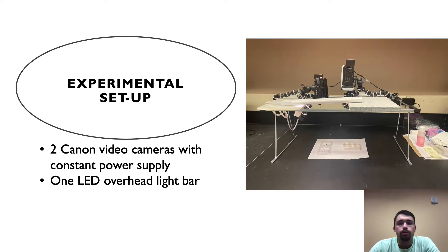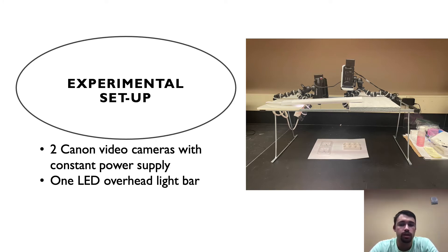To conduct our experiment, we first set up an experimental apparatus to collect the data we needed. We used two identical Canon video cameras with a constant power supply so that we knew the cameras wouldn't die during experimentation. Additionally, we had one LED light bar overhead where we were going to record the flies' mating interactions. The light was wrapped in a piece of paper to reduce its intensity and keep the glare down on the video. Lastly, we had a plain piece of paper to provide a bright background for recording the flies' interactions.